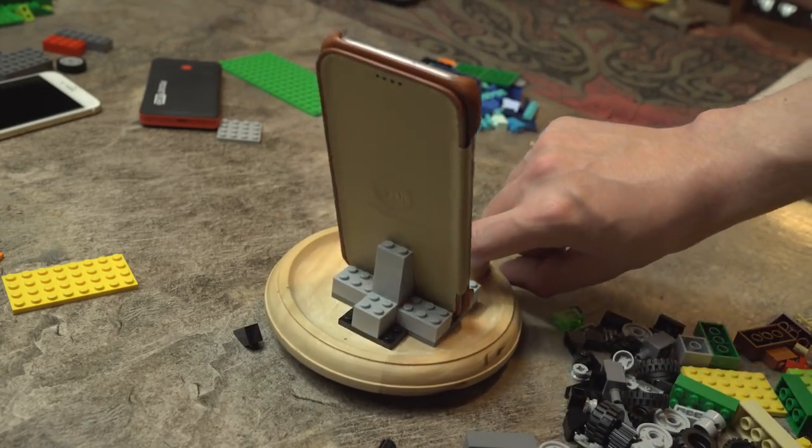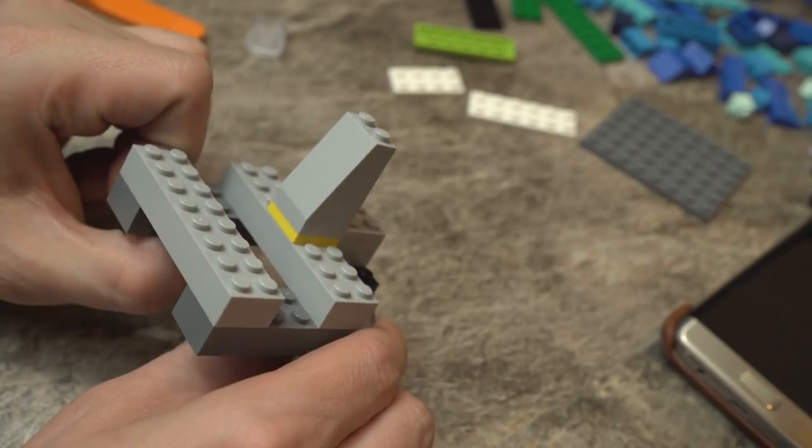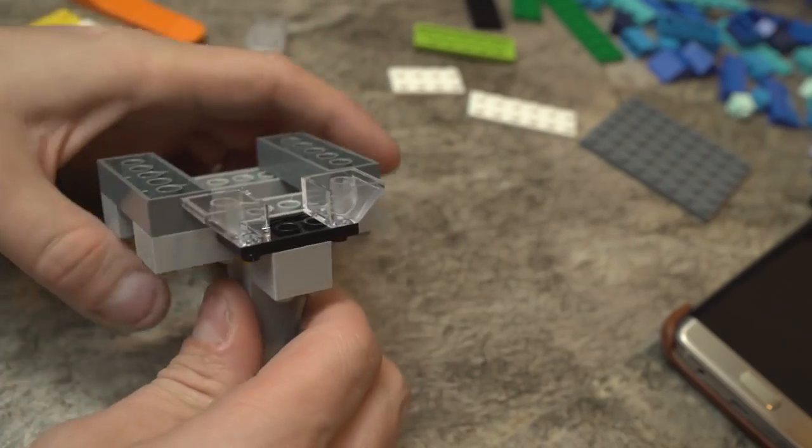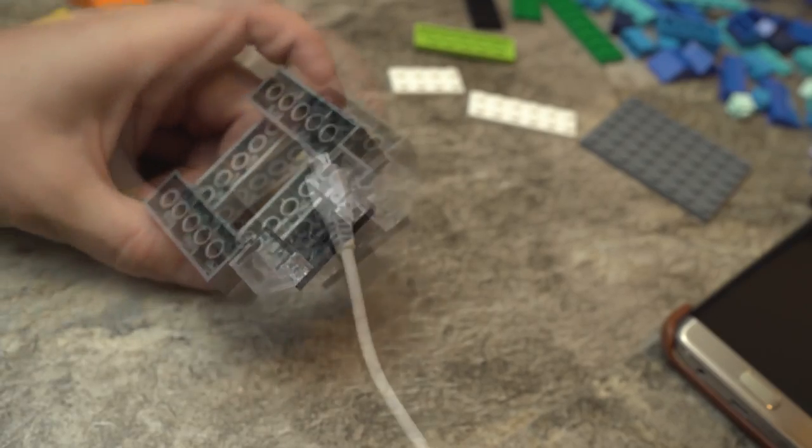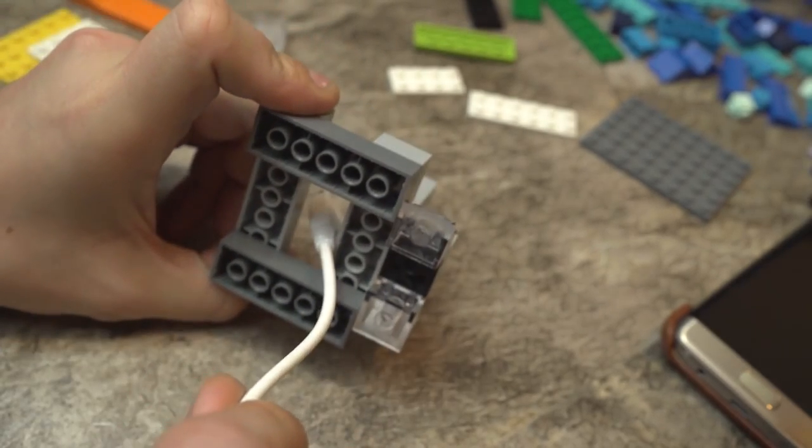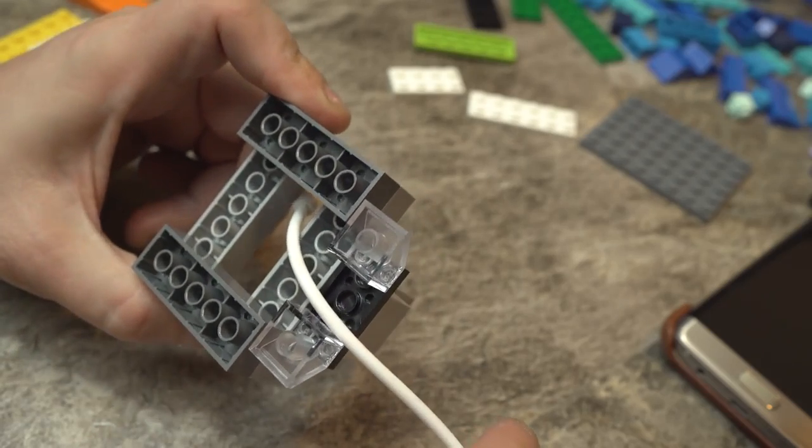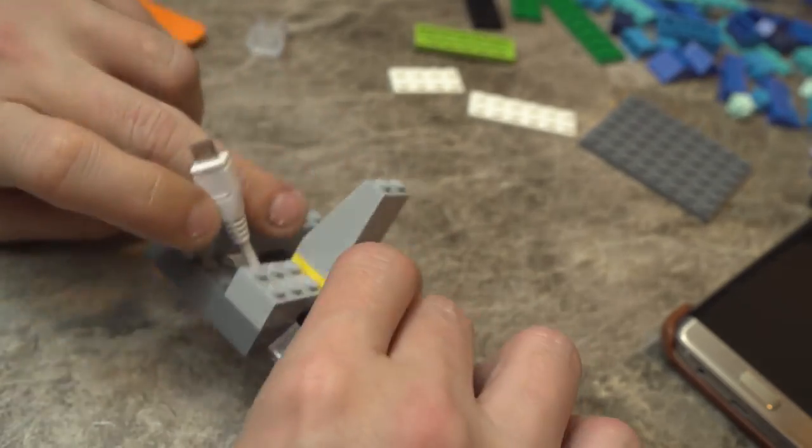But what about a charging holder or a dock? The stand can easily be adapted into a dock by removing the base plate and replacing it with two long bricks to support the phone holder. The gaps created by lifting the blocks up should allow you to easily slide a cord in and let your phone charge while it's sitting in the dock. It's not that pretty, but it's certainly effective.